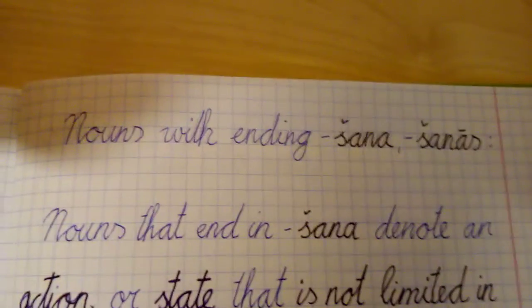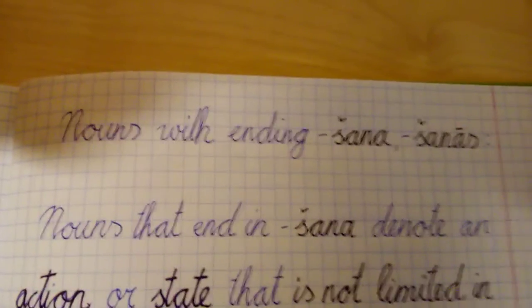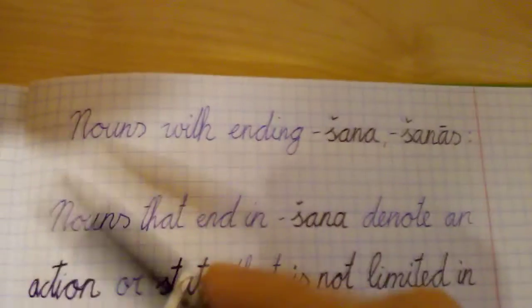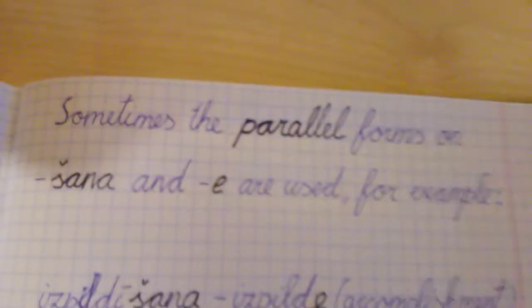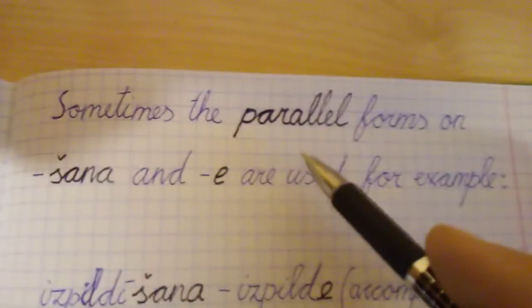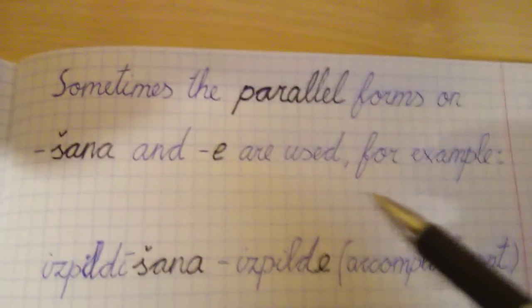Hello dear friends. I continue to teach a Latvian lesson. Again, the nouns with ending -šana/-šanās continue. Sometimes the parallel forms on -šana and -e are used, for example: